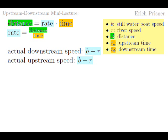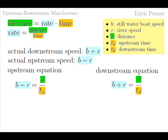Therefore we have two equations. One for upstream and one for downstream. B minus r equals d over tu, the upstream equation. And b plus r equals d over td, the downstream equation.